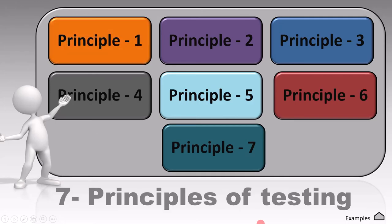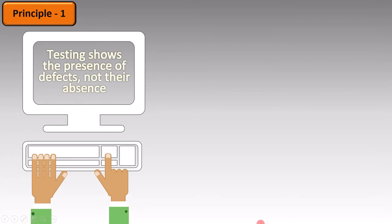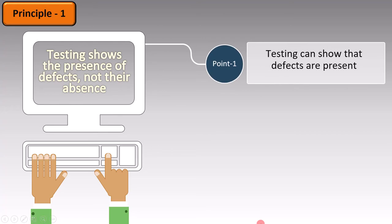The first principle says that testing shows the presence of defects, not their absence. The first point: testing can show that defects are present. When we carry out testing and find a defect, we know that there is a problem with the software. So testing can show the defects that are present.